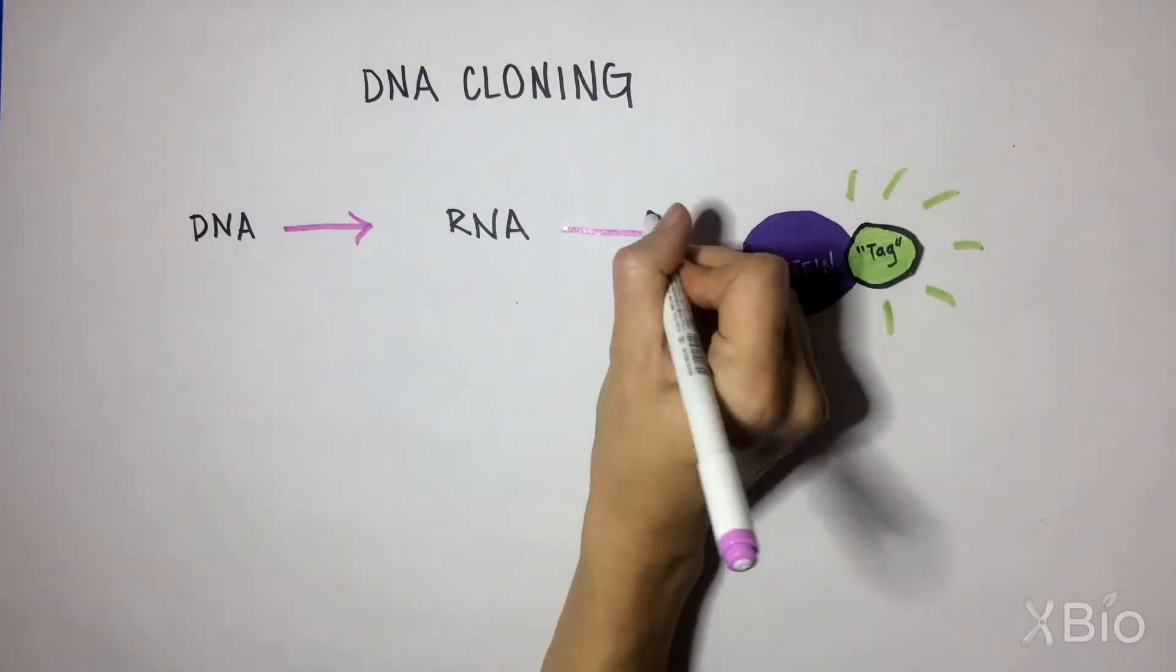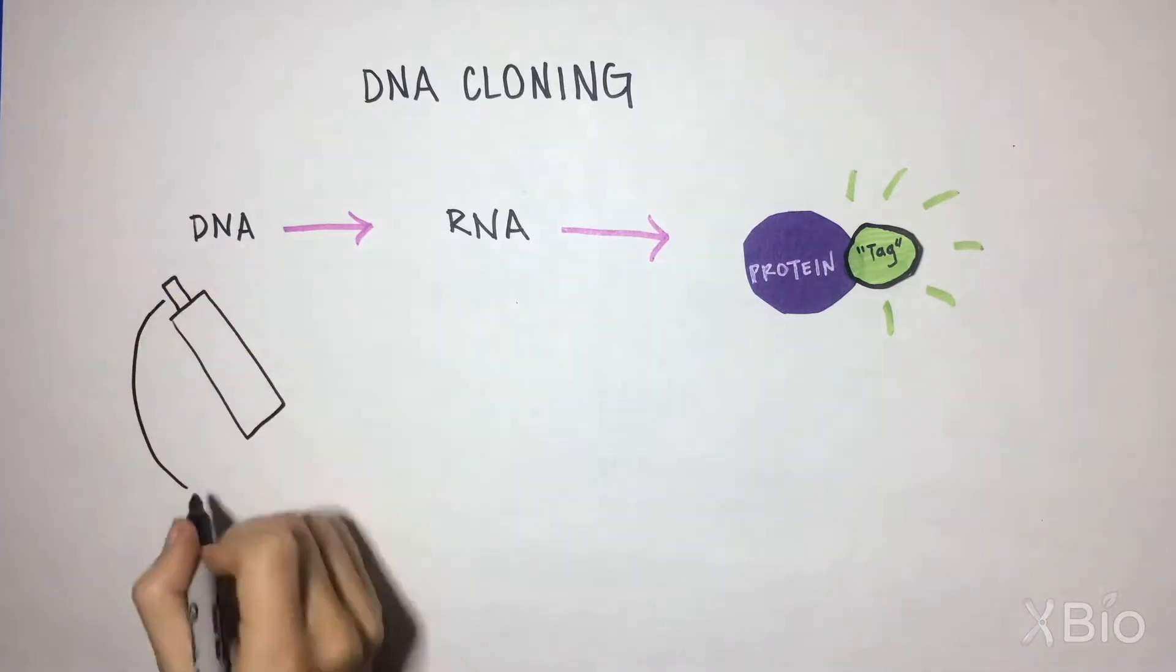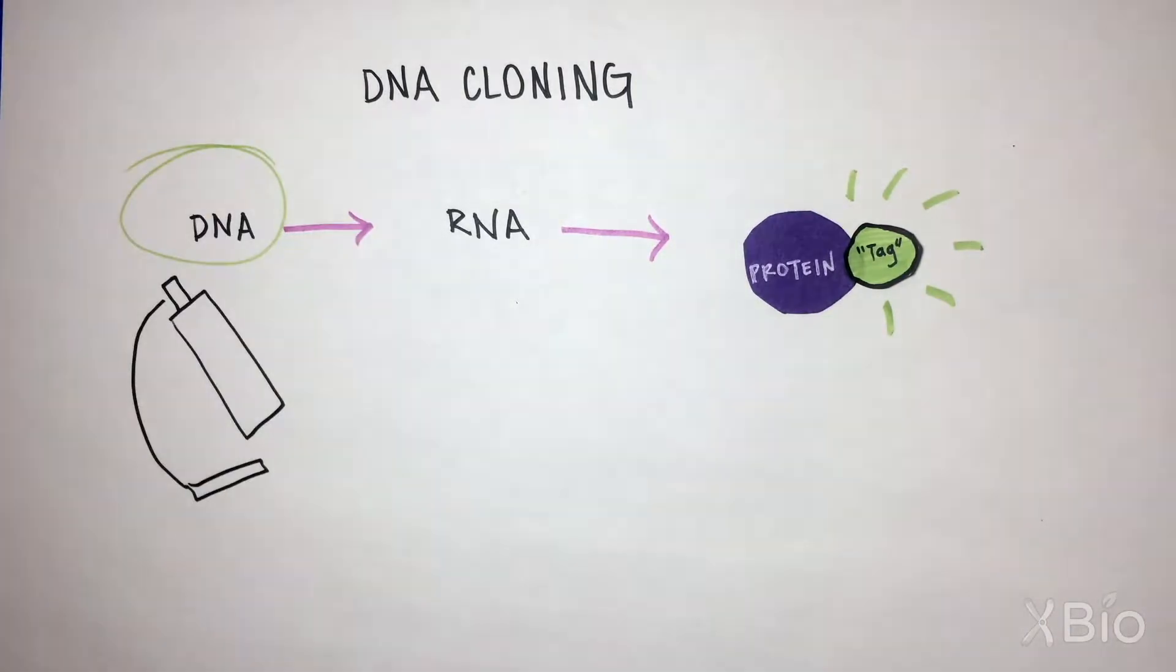Remember the central dogma in biology: DNA encodes RNA encodes protein. So whichever type of macromolecule needs to be studied, it is originally expressed from DNA. That is why we clone at the DNA level.